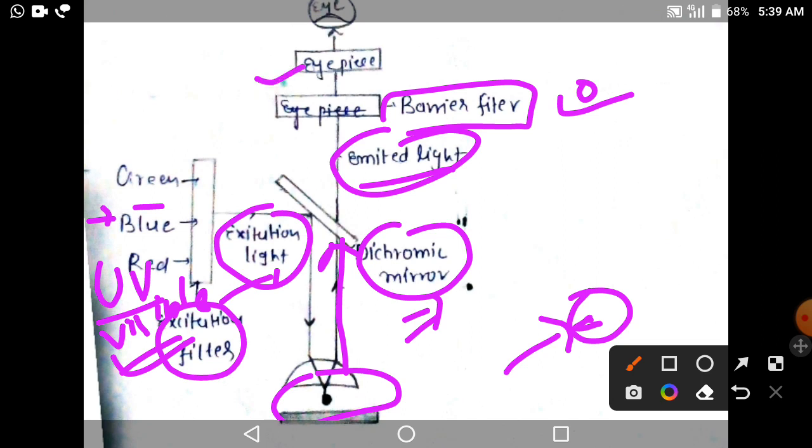Through the eyepiece and then to our eye. This is the basic concept of fluorescence microscopy.